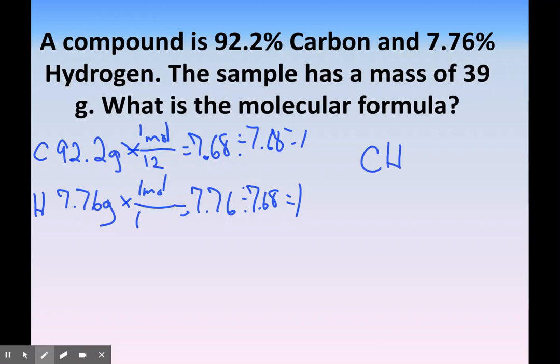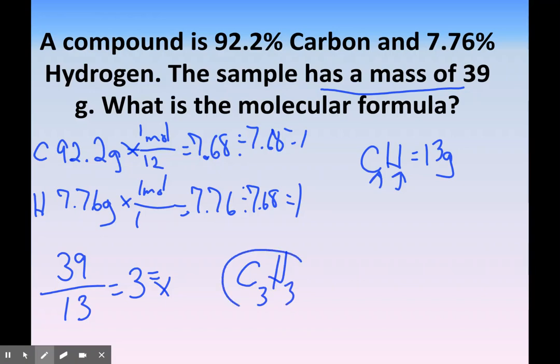Now find the mass of your empirical formula. Carbon is 12 and hydrogen is 1, so that's 13 grams. Then take the mass given in the problem, 39, and divide it by the mass of our empirical, which gives us 3. This is our x value. Now we take that number and multiply our subscripts from the empirical formula, so our molecular formula is C3H3. That's our answer.